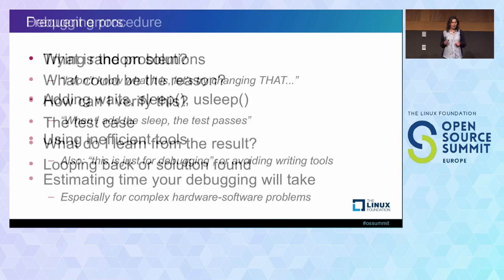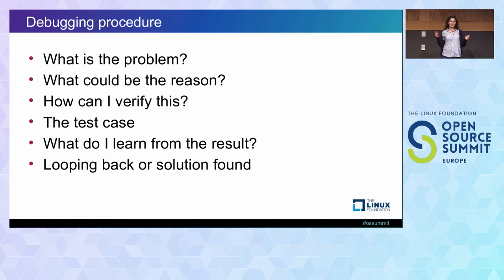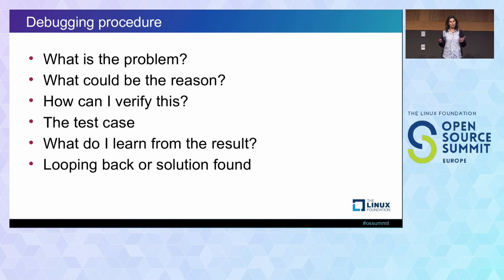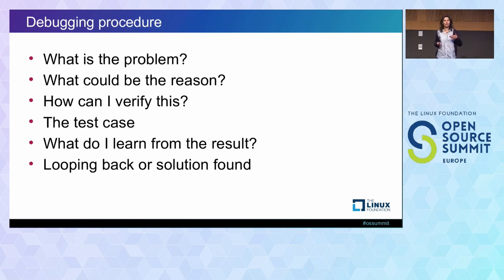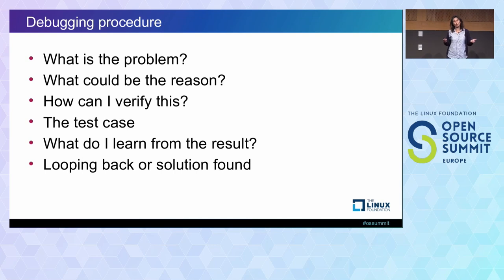So, this is my secret methodology that I'd like to share with you today. Let's go through it rapidly. First, defining what the problem is. Then listing the possible reasons for this problem. After that, looking into ways to verify that a given reason is actually the cause. Then you write the test case, run the test case, analyze what you got, and then either look back or you have a solution. It's going to be easier with an example, so let's go to one.